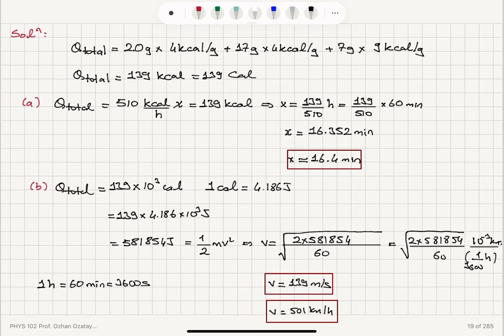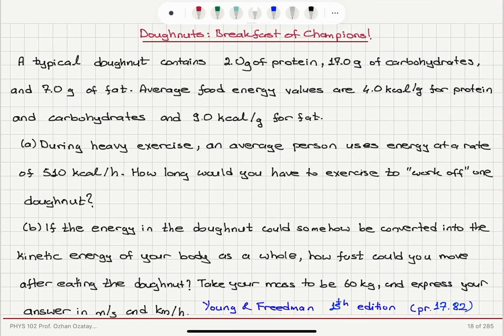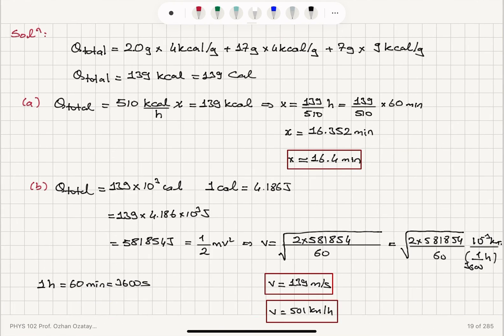If we somehow can convert this energy to kinetic energy as a whole, how fast can we move right after eating the donut for a 60 kilogram person? This energy must be converted to mechanical equivalent. 4.186 joules is 1 calorie. With that, this mechanical energy equals one-half mV². We obtain V in meters per second, or if we multiply by 10⁻³ (because a meter is 10⁻³ kilometers), and a second is 1 over 3600 hours, we obtain 501 kilometers per hour.